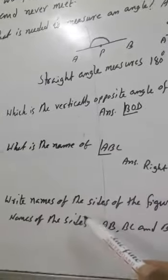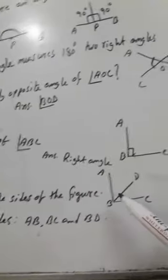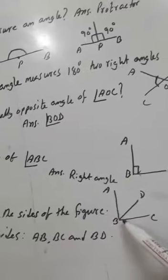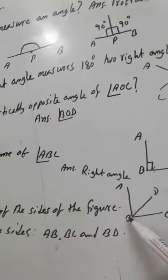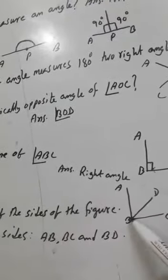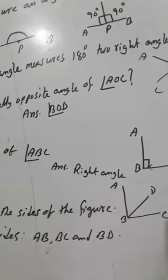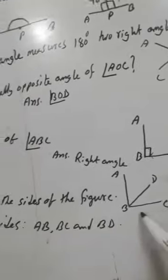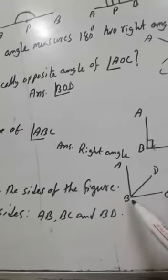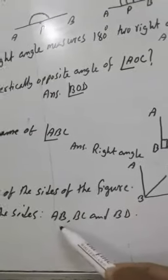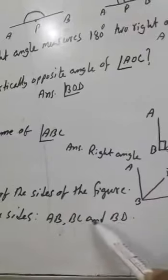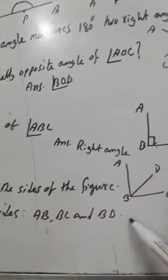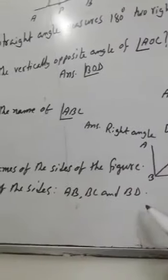Write the names of the sides of the figure. There are three sides given: this side is AB, this side is BD, and this side is BC. So the three sides are AB, BD, and BC.